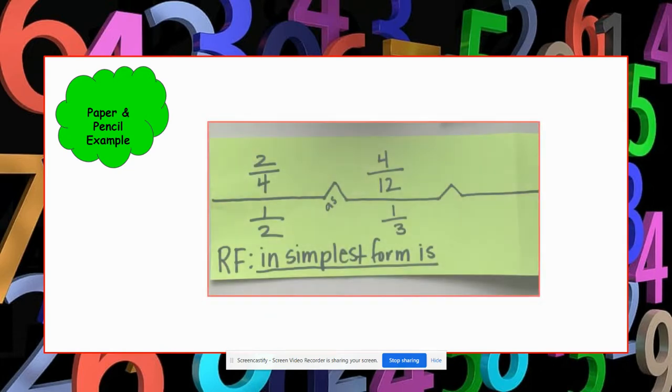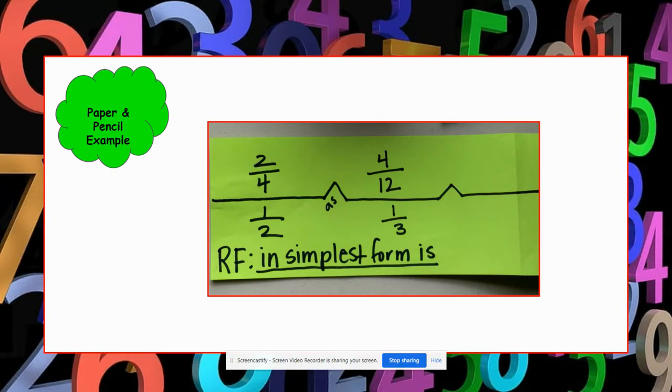Now here's just a quick example of if you were to do this bridge map on paper and pencil instead of doing it in a slide. Same thing – the relating factor is still 'in simplest form is,' and I've just written here: two-fourths in simplest form is one-half, as four-twelfths in simplest form is one-third.